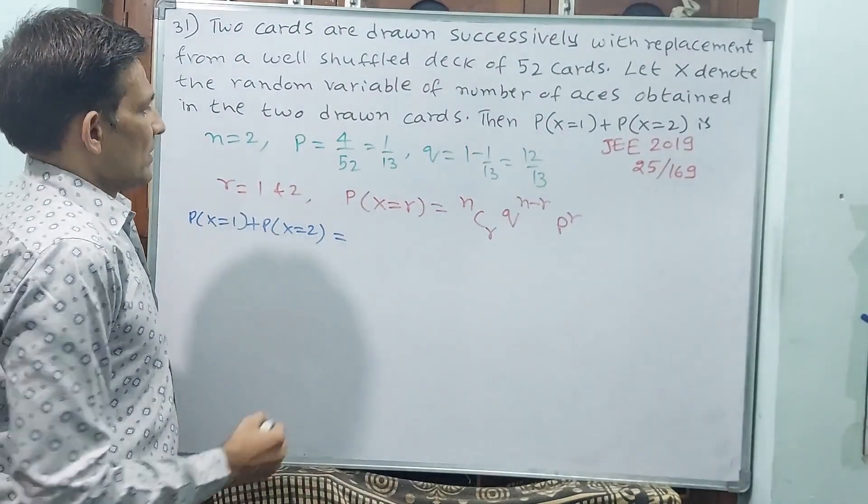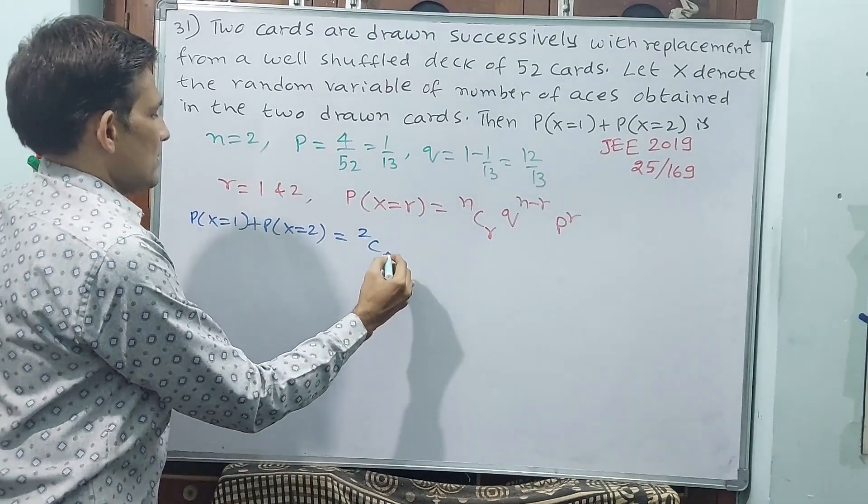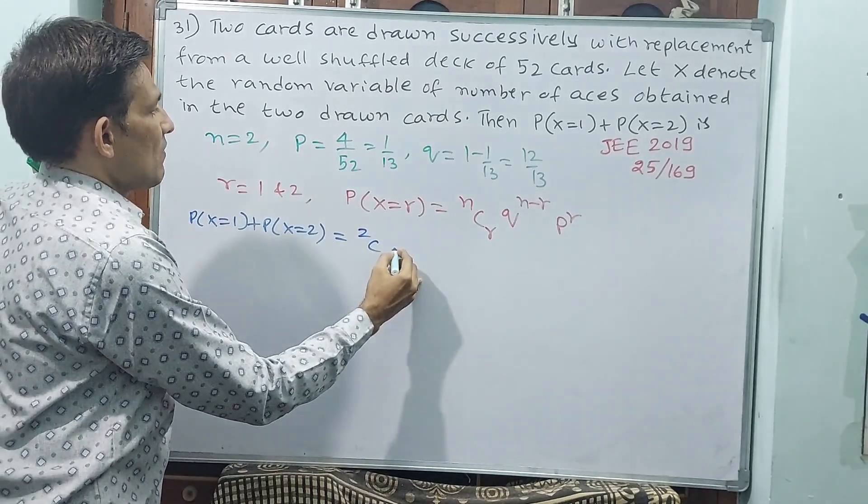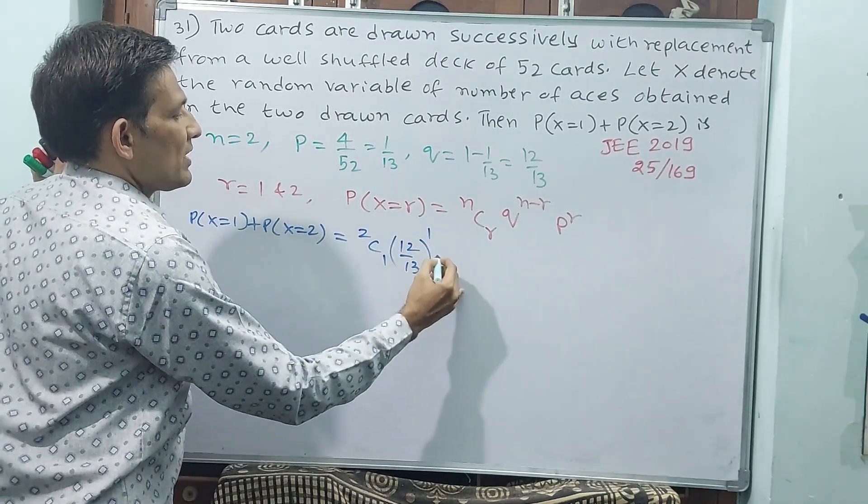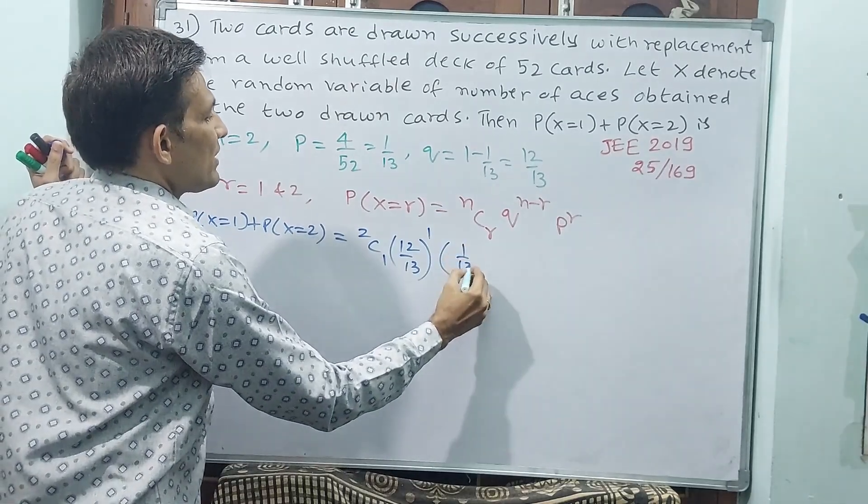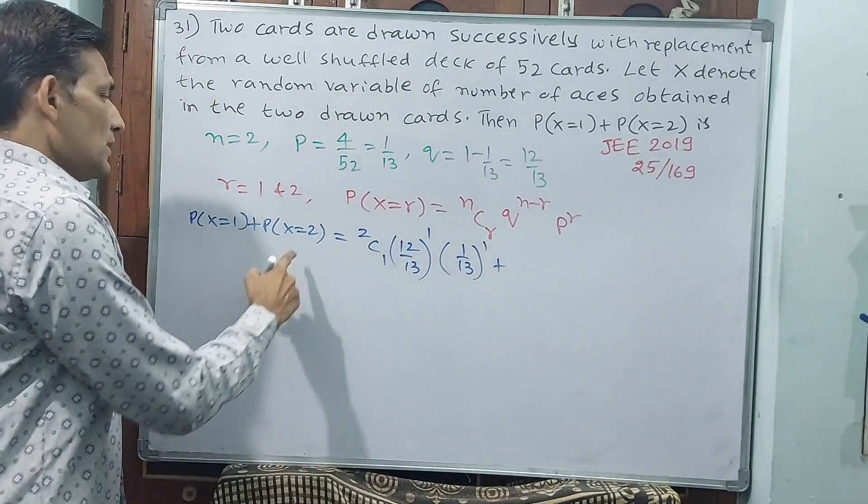Okay? Now, 2C1, and what about q? q is 12 by 13 whole power 2 minus 1, that's 1, and 1 by 13 whole power 1, plus.